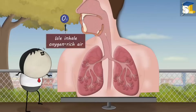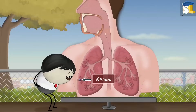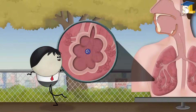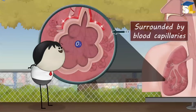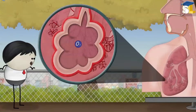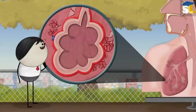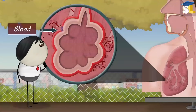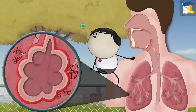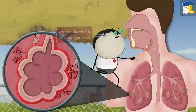Normally, we inhale oxygen-rich air which reaches our alveoli. Alveoli are surrounded by blood capillaries. Here, the oxygen through the walls of alveoli diffuses into our blood. However, sometimes we also inhale harmful microorganisms.